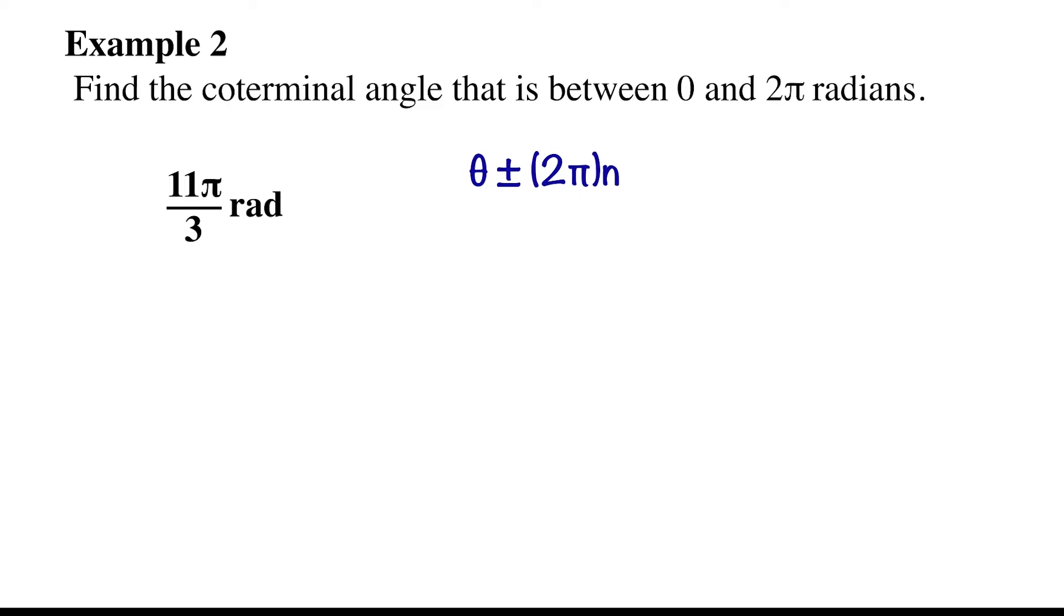Since we are working with fractions, we have some extra steps. We can't just subtract 2 pi from 11 pi over 3, so we need to find common denominators. This gives us 11 pi over 3 minus 6 pi over 3. Now, just subtract the numerators and we get the coterminal angle in the range we are looking for.